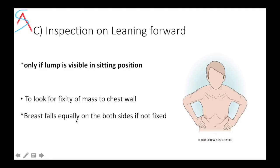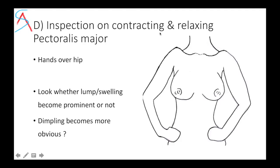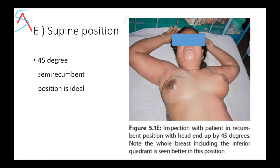When leaning forward, look for fixity of the mass to the chest wall — if both breasts fall equally on both sides, the mass is not fixed to the chest wall. Next is inspection on contracting and relaxing pectoralis major — tell the patient to keep her hand on the hip and contract, making the anterior axillary fold taut. Check whether the lump becomes prominent or dimpling becomes more obvious. The last position is supine, ideally a 45-degree semi-recumbent position, which helps inspect the inferior quadrant.